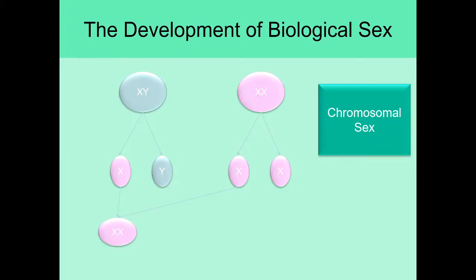When the X chromosome from the dad pairs up with one of the X chromosomes from the mom, you end up with an XX offspring. If the Y chromosome from the dad pairs up with that X from the mom, that produces an XY offspring. Looking at the other X from the mom, we end up with a different potential XX combination, or paired with the Y, a different XY pattern. So there are really four possible outcomes of pairings of the Xs and Ys that the parents are carrying.